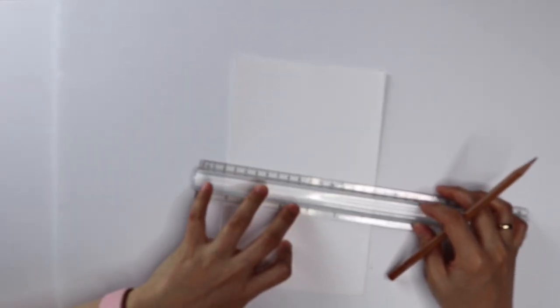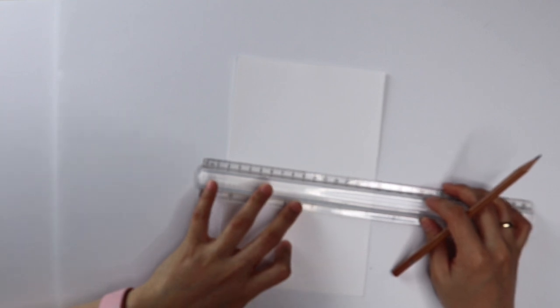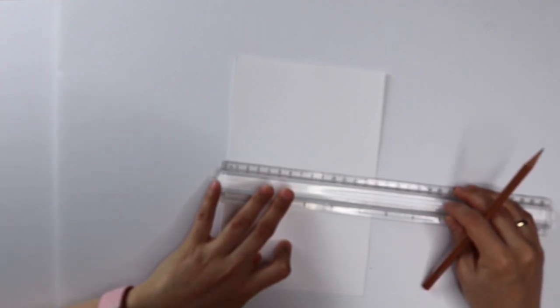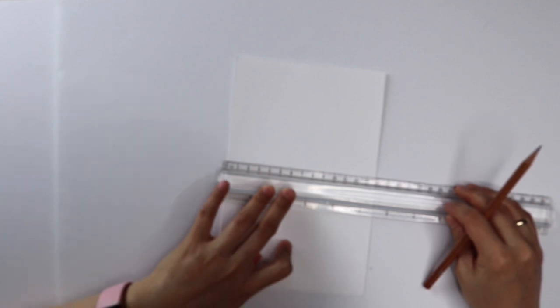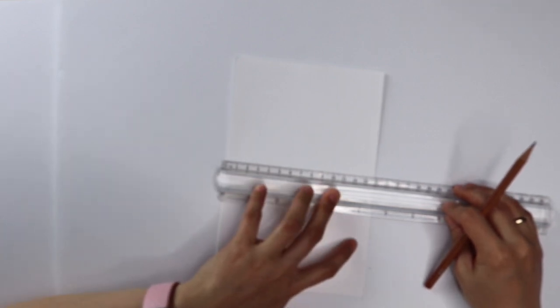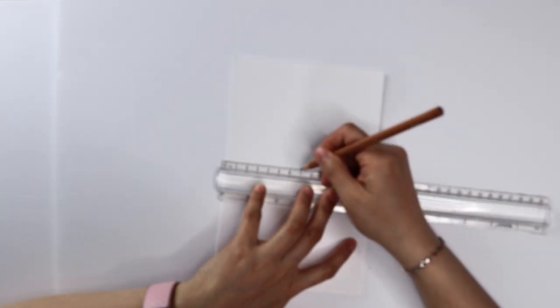Some tools you need for making a color wheel include a ruler, a pencil and eraser, a compass, a protractor, some watercolor paper, primary pigments, palette, watercolor brushes, and some water for cleaning the brushes.